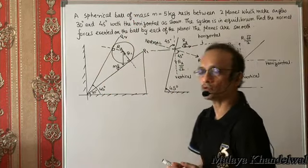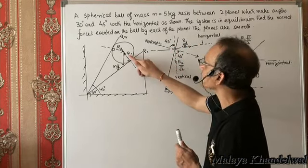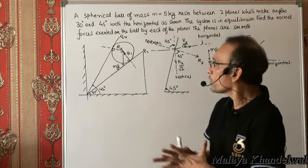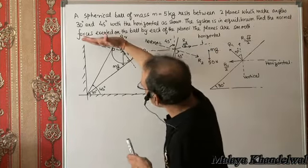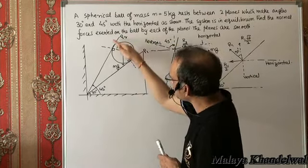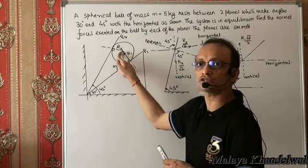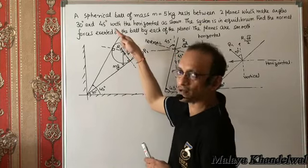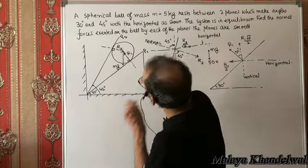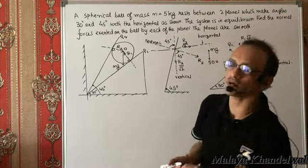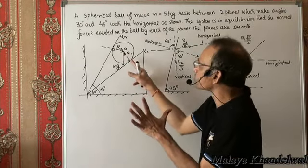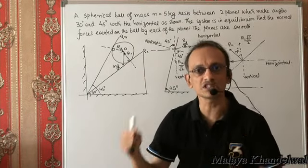What we want to find is the normal reactions R1 and R2 that the two planes exert on the sphere. One key thing: a normal to a spherical surface will always pass through the center of that surface. So R2, perpendicular to plane P2, will pass through the center of the sphere. R1, perpendicular to P1, will also pass through the center of the sphere. The weight mg also passes through the center O. So we have three concurrent forces — R1, R2, and mg — disposed as shown, and they must produce equilibrium.